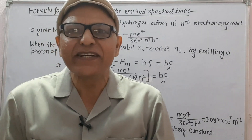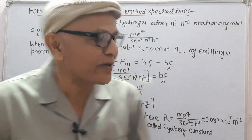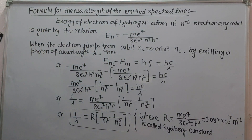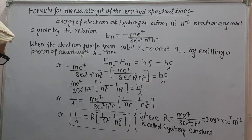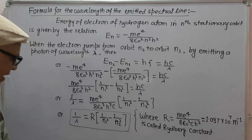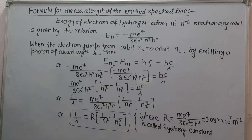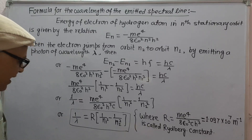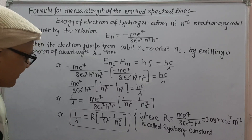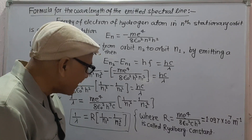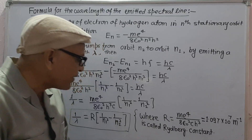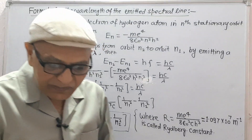Hello students. In today's video we will study about the formula for wavelength of emitted spectral line, energy level diagram of hydrogen atom, excitation energy and excitation potential, ionization energy and ionization potential, De Broglie wavelength, and Heisenberg's uncertainty principle.